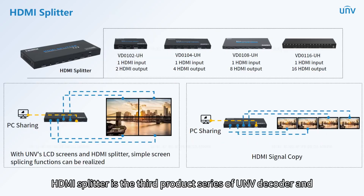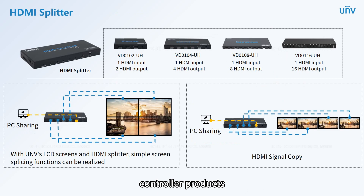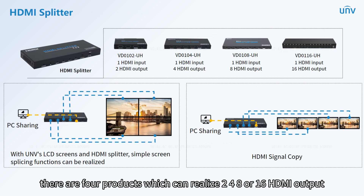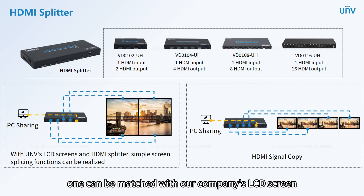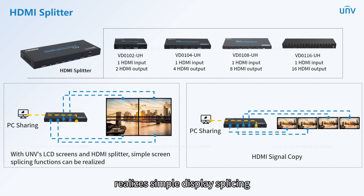The HDMI splitter is the third product series of UNV decoder and controller products. There are four products that can realize 2, 4, 8, or 16 HDMI output. It has two functions: one can be matched with our LCD screens to realize simple display splicing, and the other can realize HDMI signal copy output with up to 16-screen copy display.